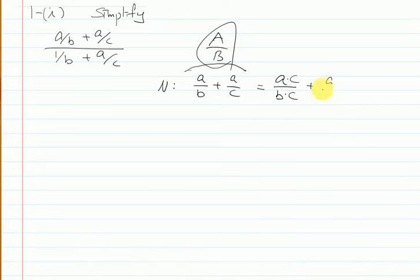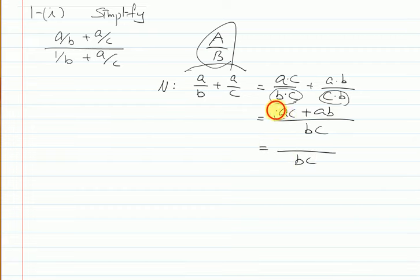From the second term, what is missing? b, right? Just multiply b like that. Then when you look at denominator, it's b times c, right? So we can make it one term using the same denominator. So ac plus ab. Oh, that's nice. Because now I can see the common factor from the numerator. So it's a times, let me change the position, b plus c.